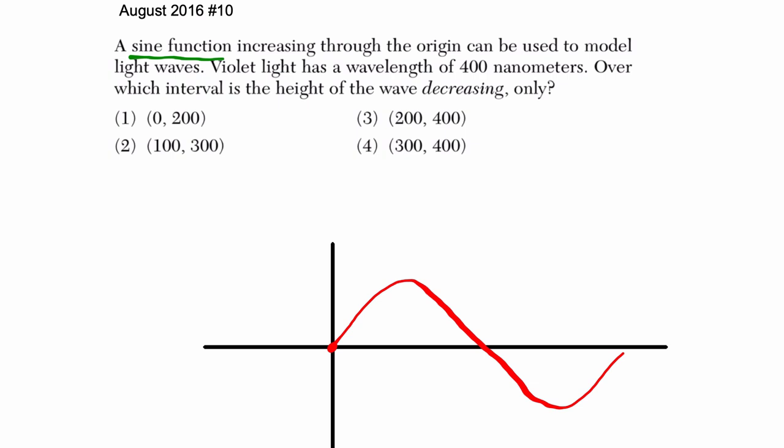And it's going to cross - they tell us right here that it has a wavelength of 400 nanometers. So here, that means one complete cycle of the wavelength would be 400.